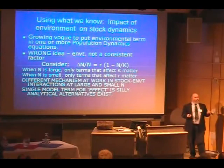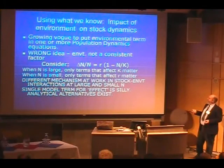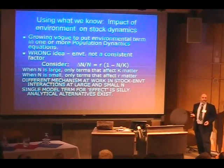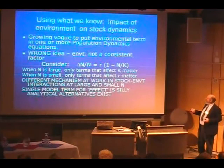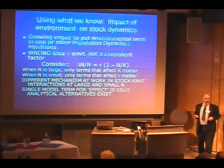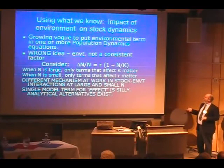Let's just look at change in population size as a function of how big the population is — one of our basic population dynamics equations; this goes back to the 1920s. If you've got a big population, unexploited, near carrying capacity, the N over K term is close to one. The only environmental signals that are going to affect change in population in some important way are environmental signals that affect K. Affecting R when 1 minus N over K is close to 0 aren't going to be a big signal.